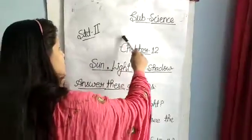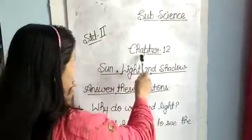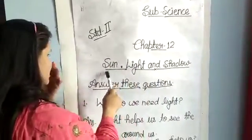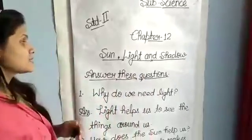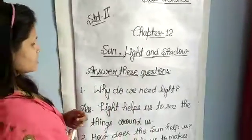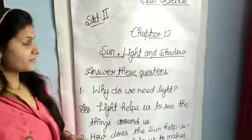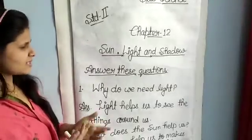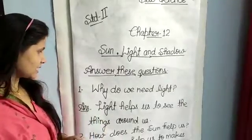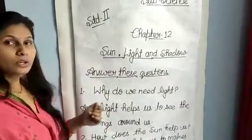Good morning students. Today we choose Science Standards Indian Chapter 12: Sun, Light and Shadow. This chapter — in the last class, we will complete all exercises and answer these questions.